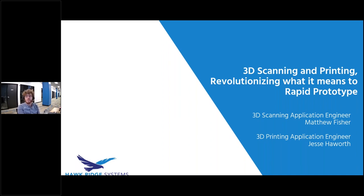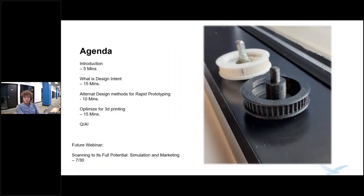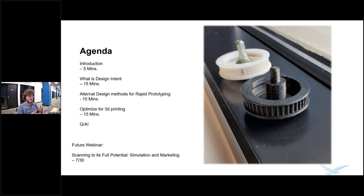So that way you can get the best product out as fast as possible. As for our agenda, I'm going to do a brief introduction on the topic, talking about the idea of 3D printing and scanning and how they work together. I'll dive into the idea of design intent — what it takes to fine-tune a scan to get the best print out of it — and then some alternative methods of designing so you can create different forms of rapid prototyping models. After that, Jesse is going to talk about the printer side, different printers that can be used, methods that come into printing, and how you can maximize the objects in your print bed or optimize the print itself.